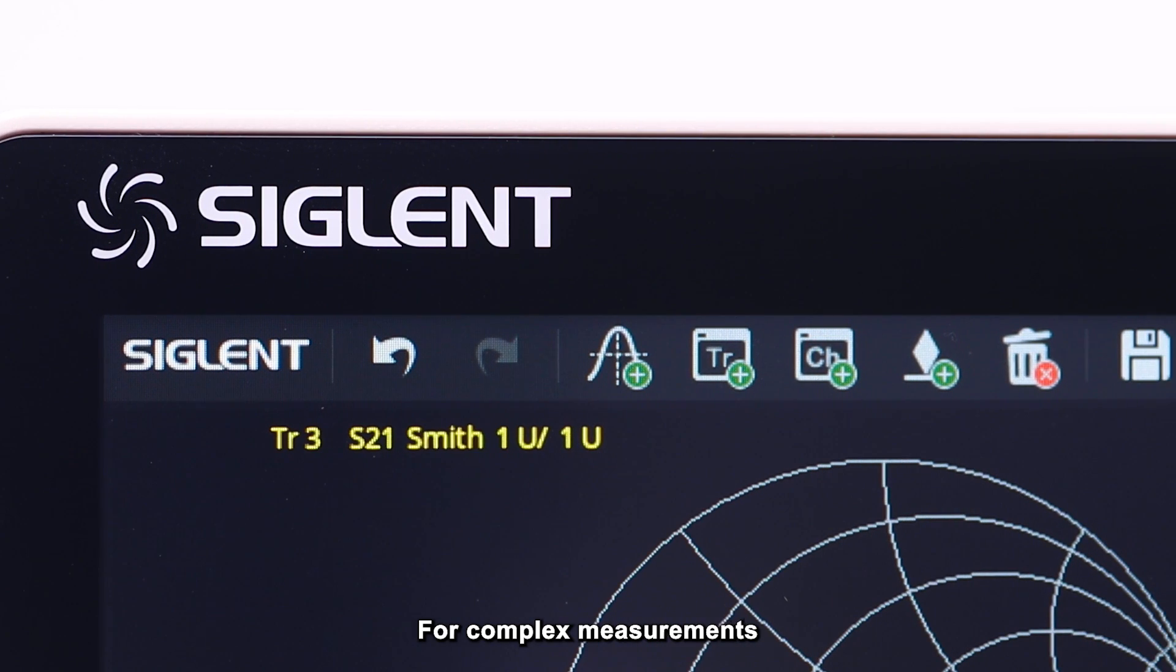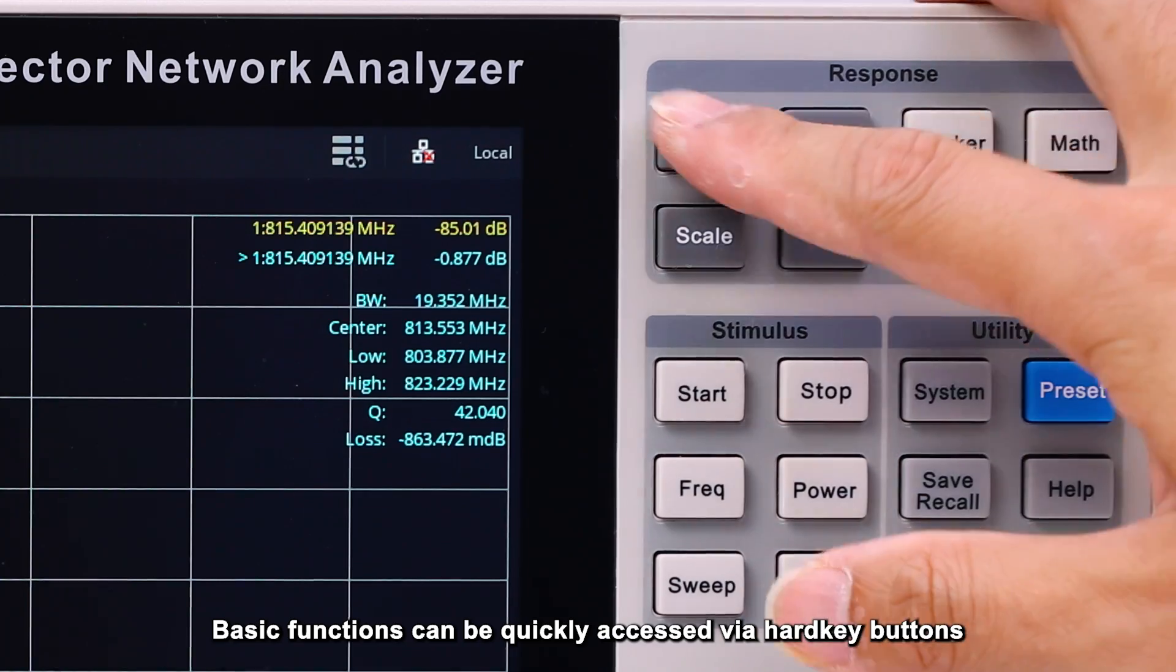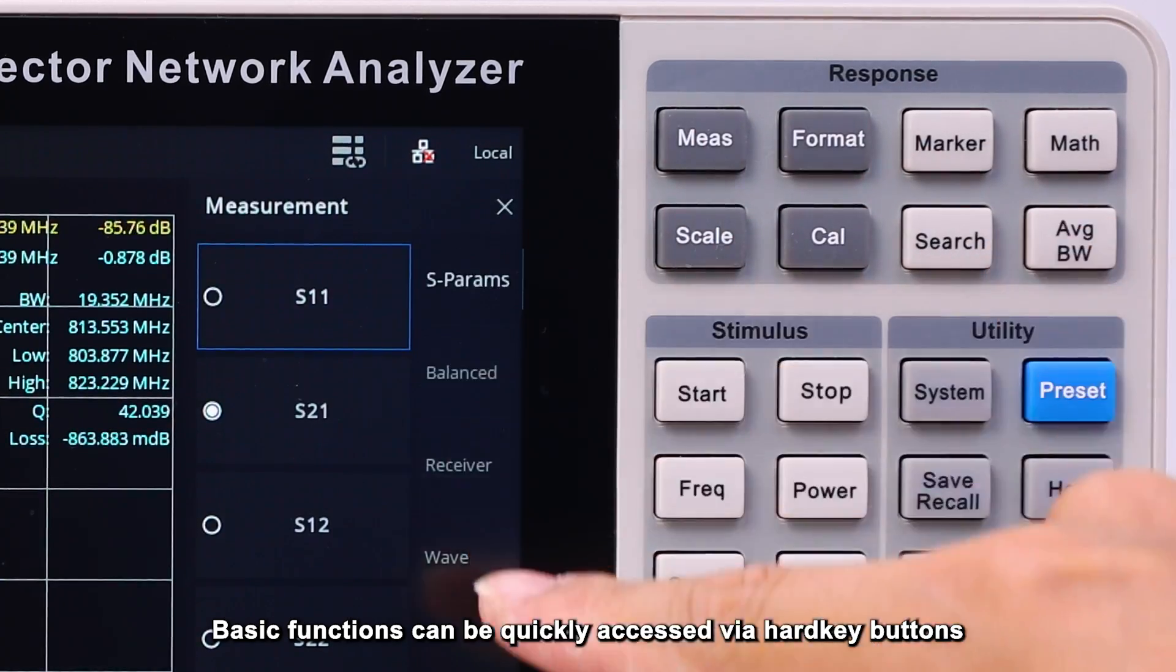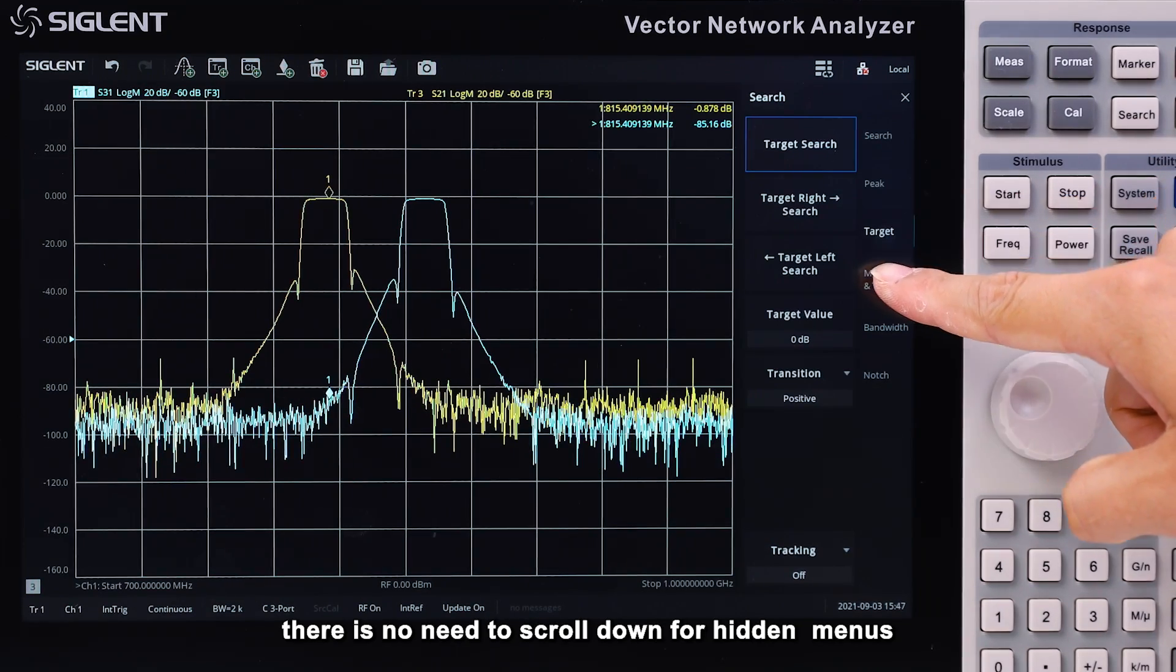For complex measurements, an easy to operate user interface is critical. Basic functions can be quickly accessed using hard key buttons, and thanks to the 12.1 inch touch screen, there's no need to scroll down for hidden menus.